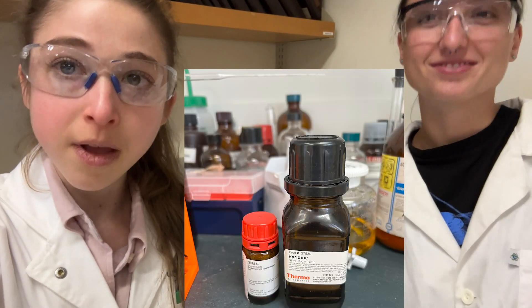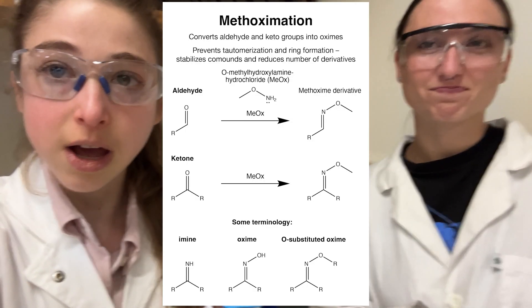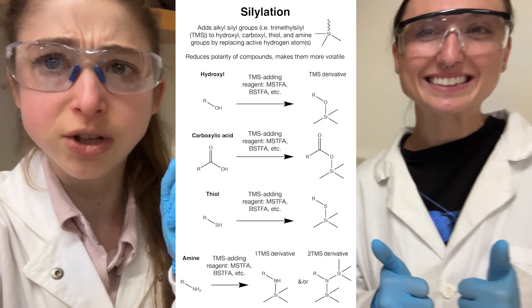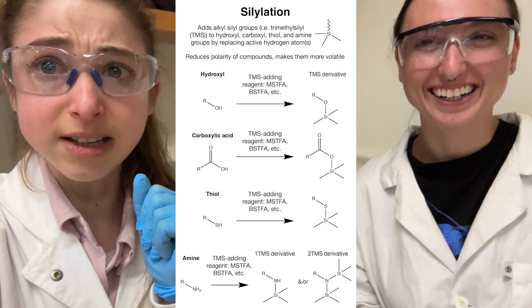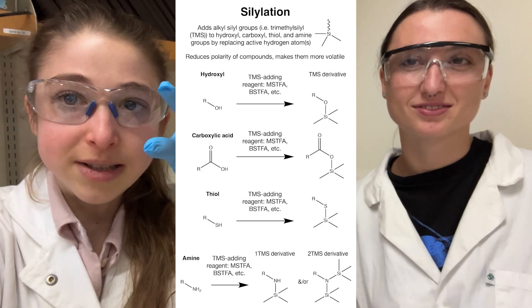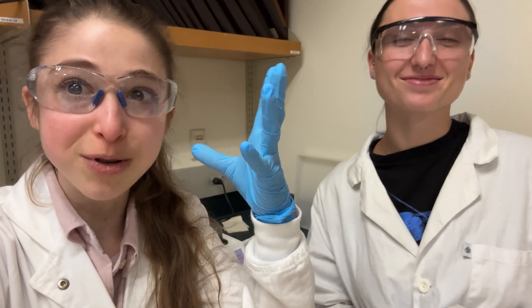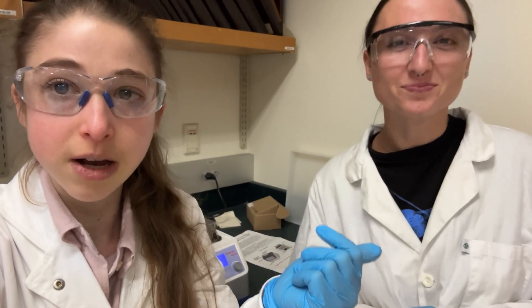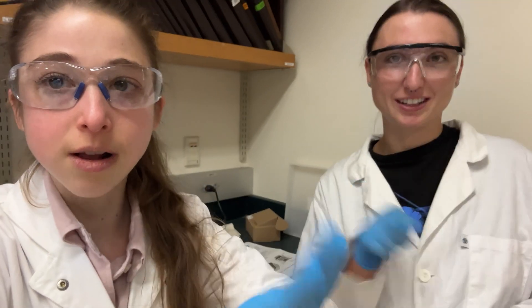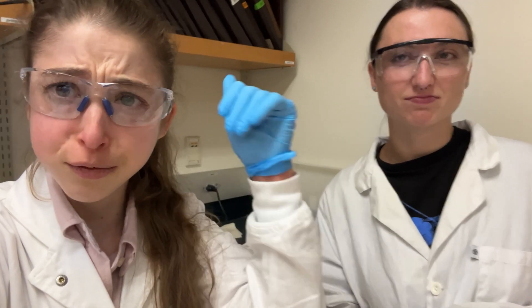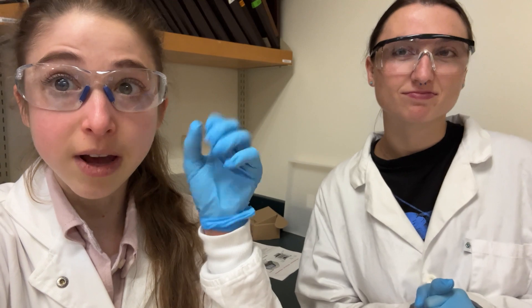The methoxymation took care of capping off the ketones and aldehydes so things didn't tautomerize, and now we are silylating — a fun word we've practiced a lot. Silly silylation! We're adding big bulky methyl groups that make the molecules not want to stick to one another so they can become a gas without heating them up too much. They'll travel better through the column, separate well, get ionized, go to a detector, and we'll compare them to a database.